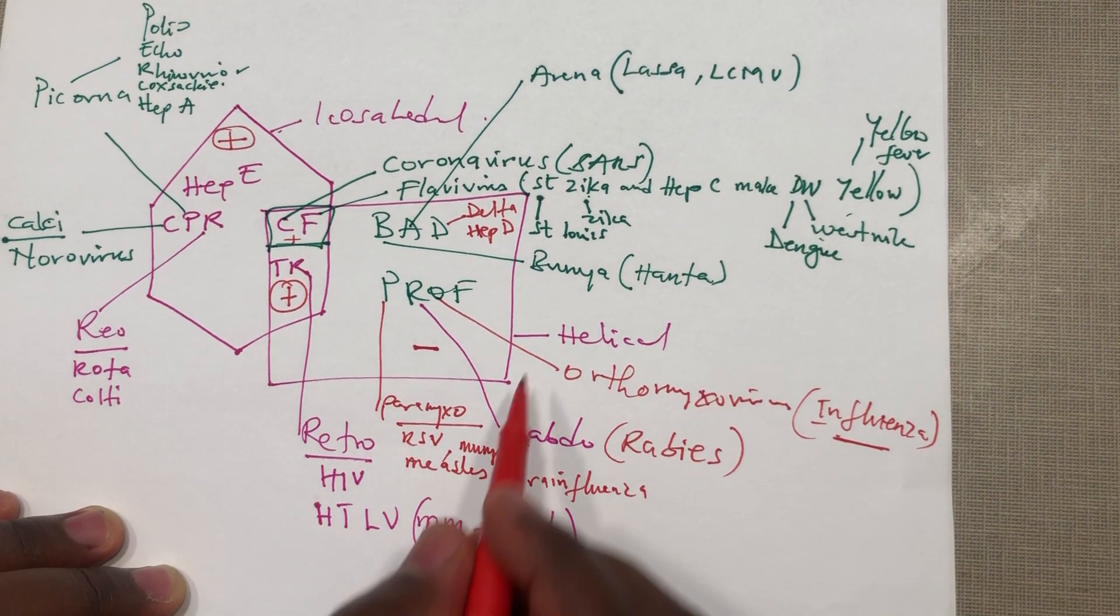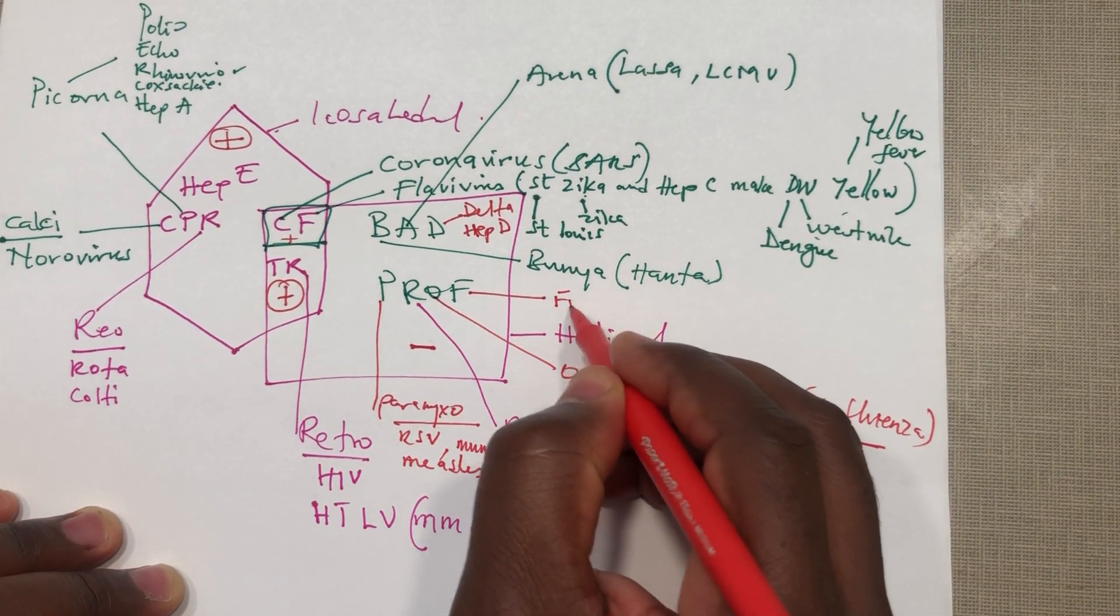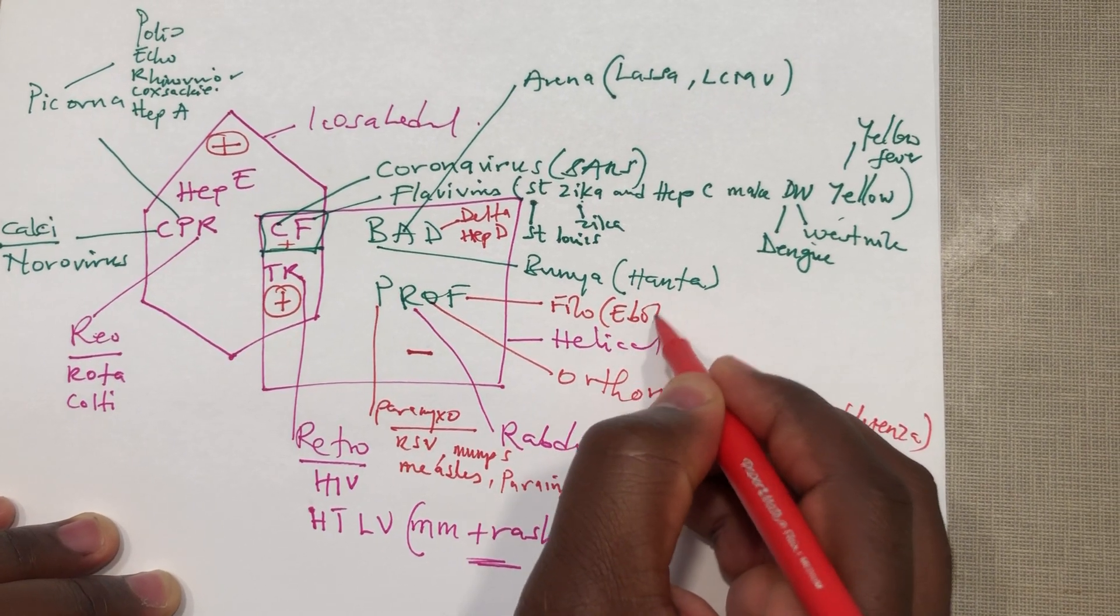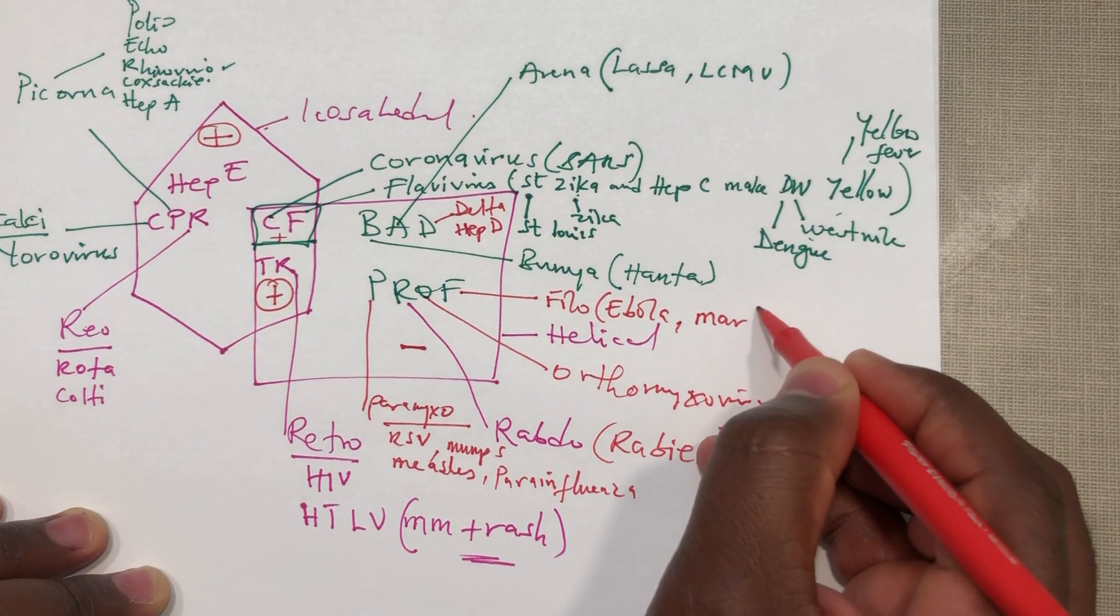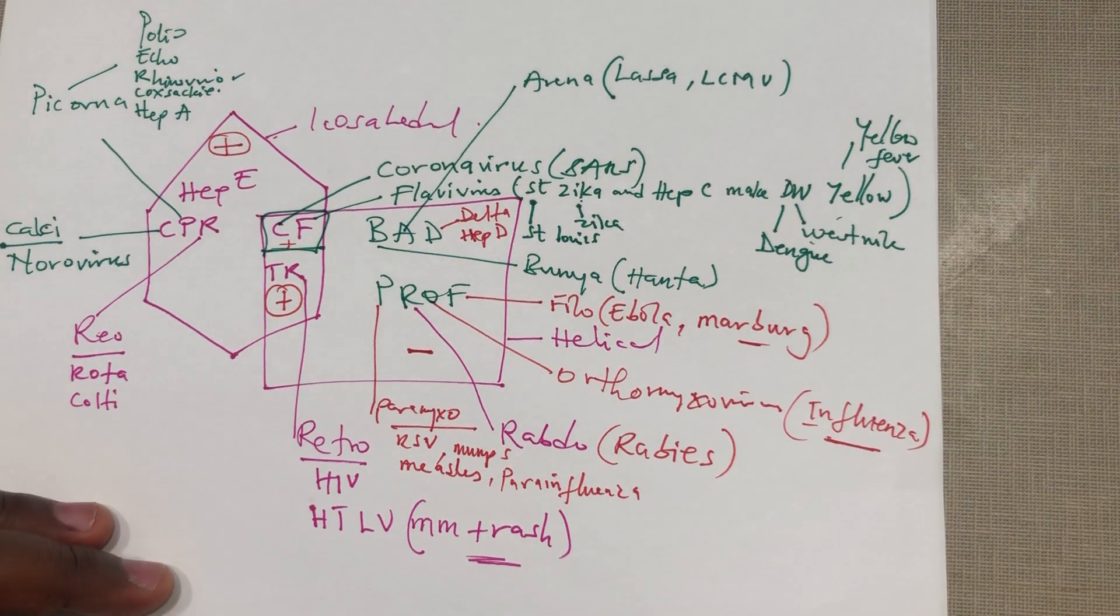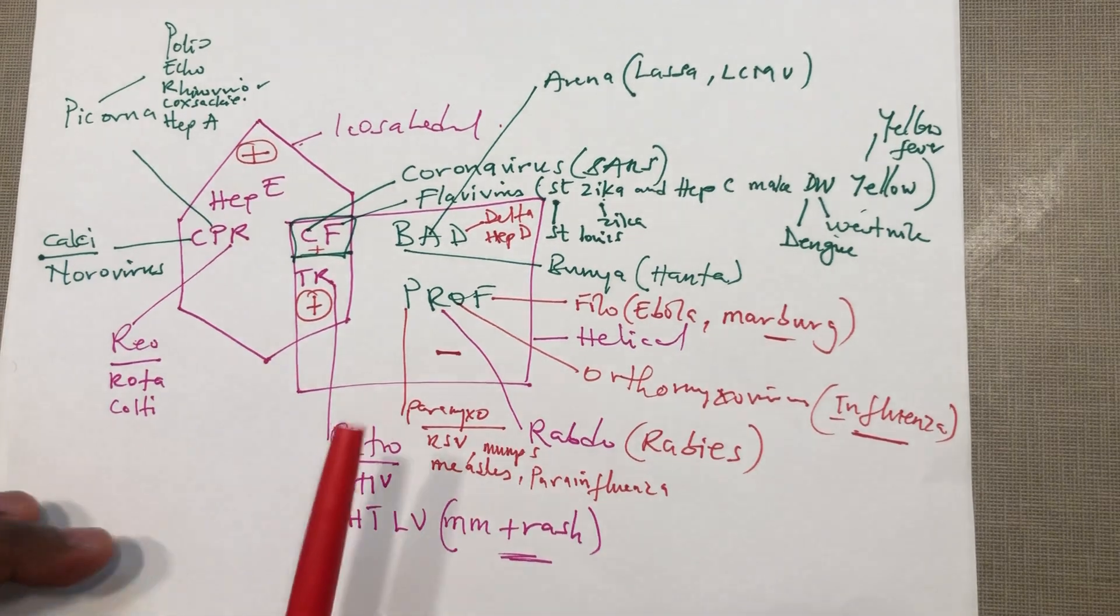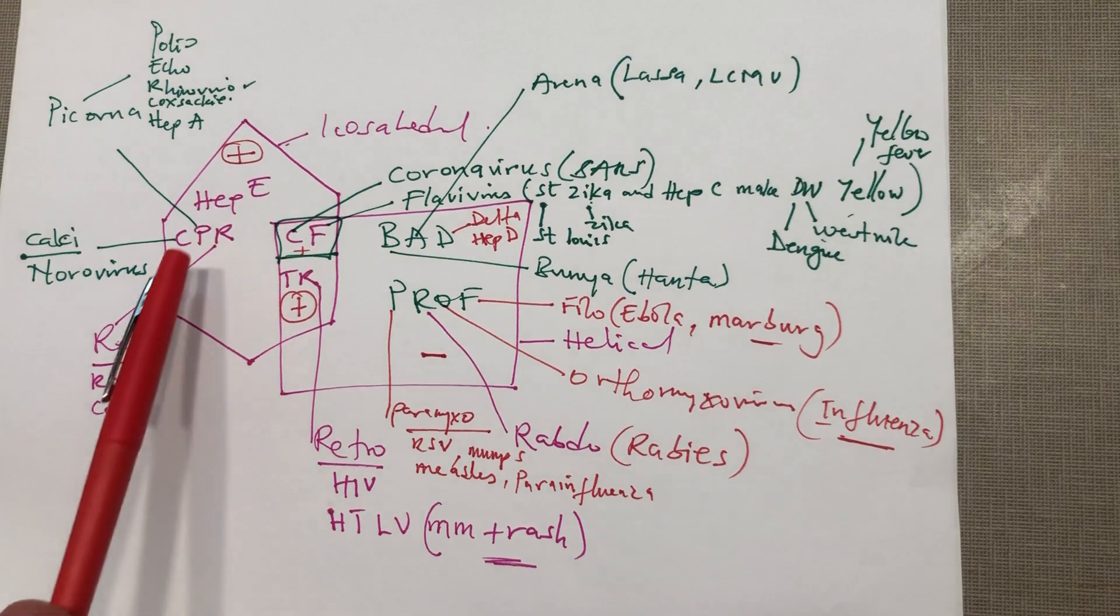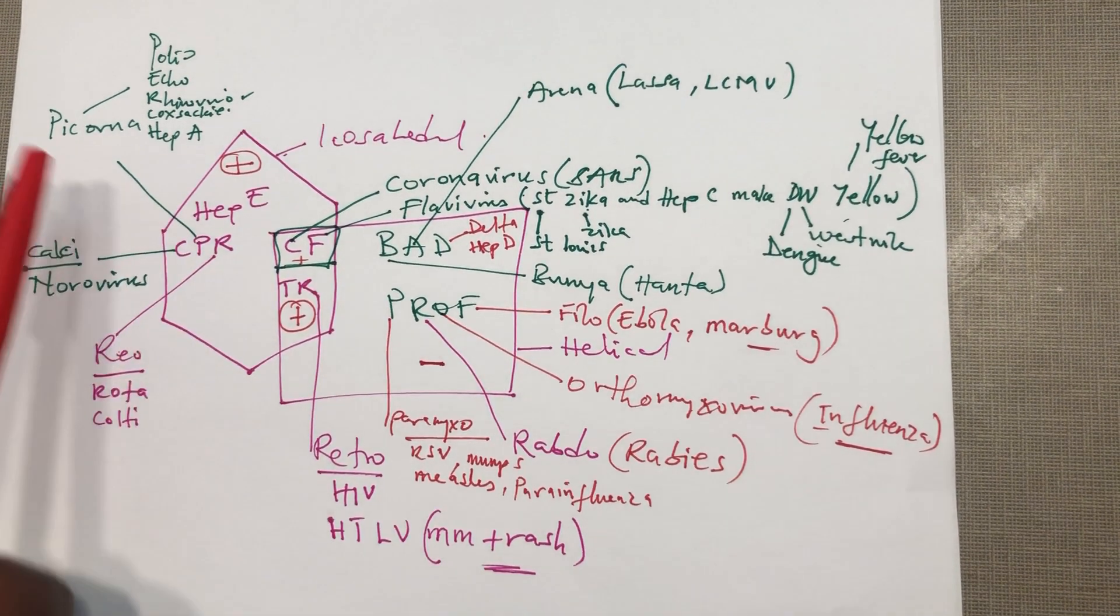Next one is the filovirus. In the filo we have the Ebola, there's an Ebola outbreak in Côte d'Ivoire right now as we speak, and then we have the Marburg virus. It's not very tested. Let's see which one have we left out.